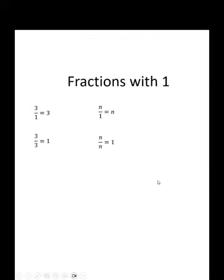Bringing it all back together, 3 over 1 is 3. Anything over 1 is that thing. 3 over 3 is 1. Anything over the same thing is 1, except it can't be 0.